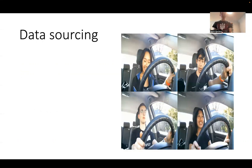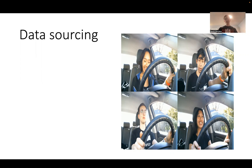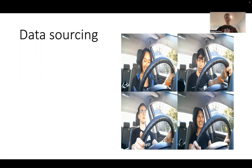For the data sourcing process, we sat in a parking lot for an hour and collected videos of us being distracted drivers or not distracted drivers. In the top row, we're looking down at the phone, we were taking a phone call, and we were rifling through the backseat. In the bottom row, we have what's considered a good driver — hands on the wheel, facing forward, checking the mirrors.